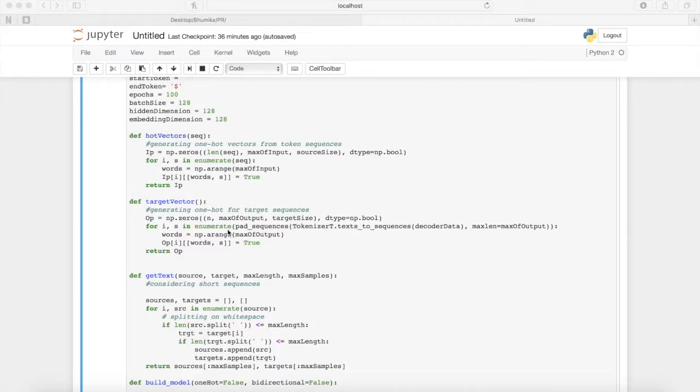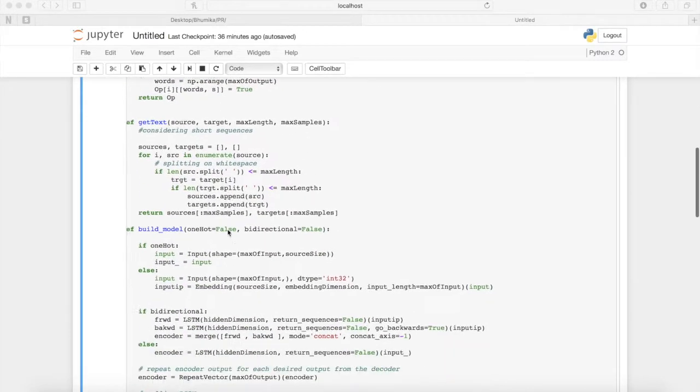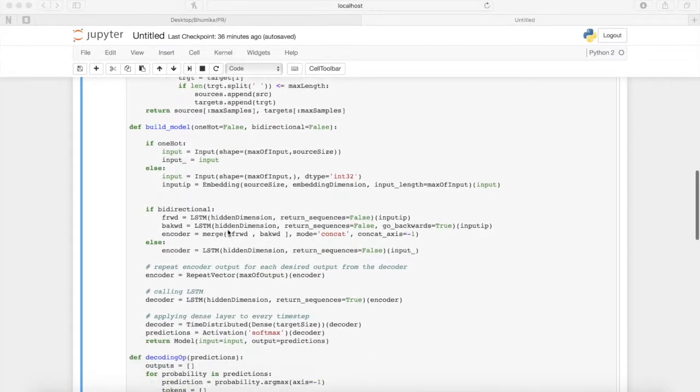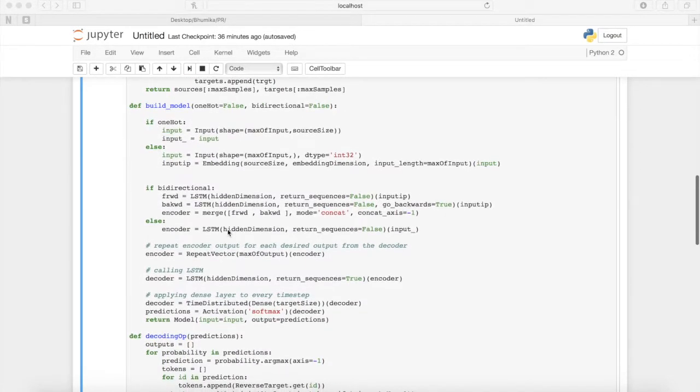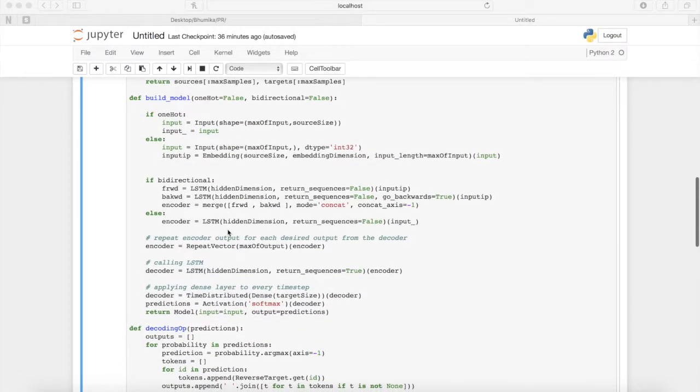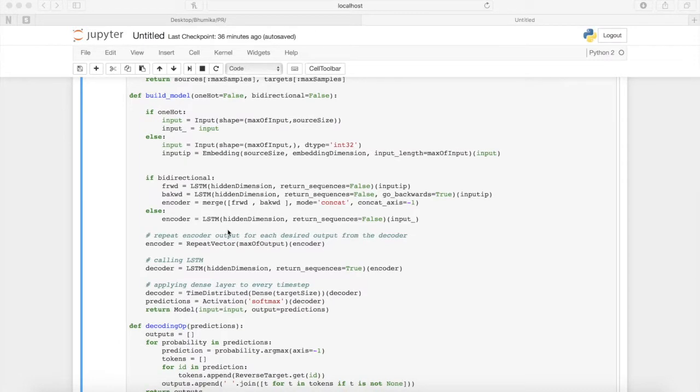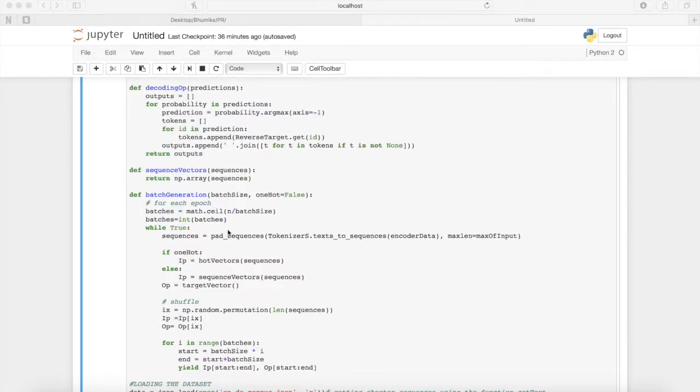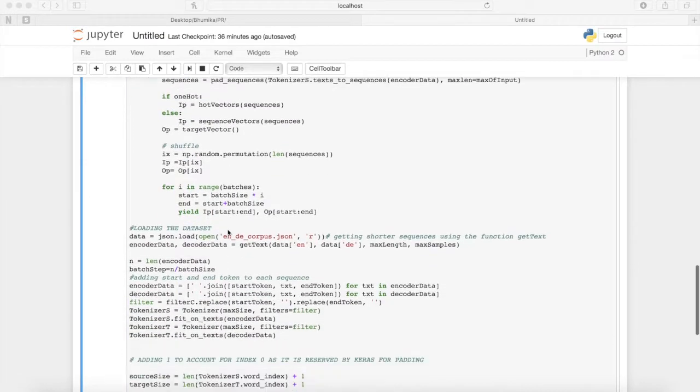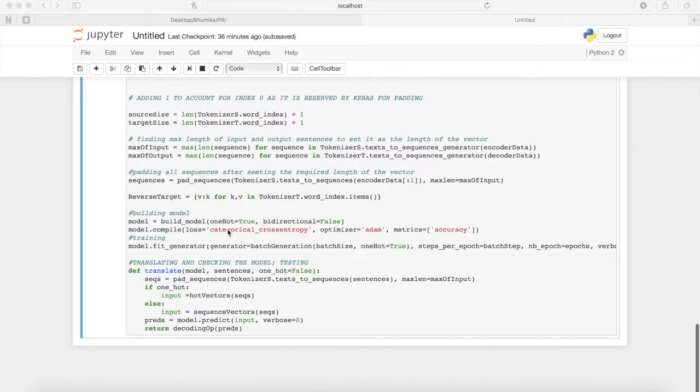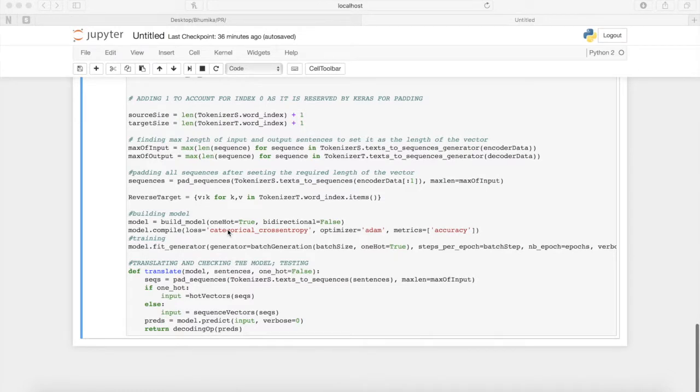Function getText converts long sentences to short sequences. In the function build model, if-else statements form the four type of model variations with bi-directional as true or false and one-hot as true or false. Function batch generation is generating batches for batch processing. Other functions are all well commented and can be gone through in the code. The function translate predicts the translated output of a text.